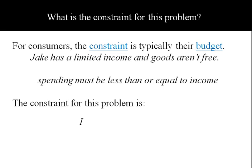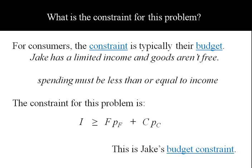So our constraint then is Jake's income has to be greater than or equal to his spending, and his spending will be the amount of food he buys times the price per unit of food plus the amount of clothing he buys times the price per unit of clothing. So this down here is Jake's budget constraint.